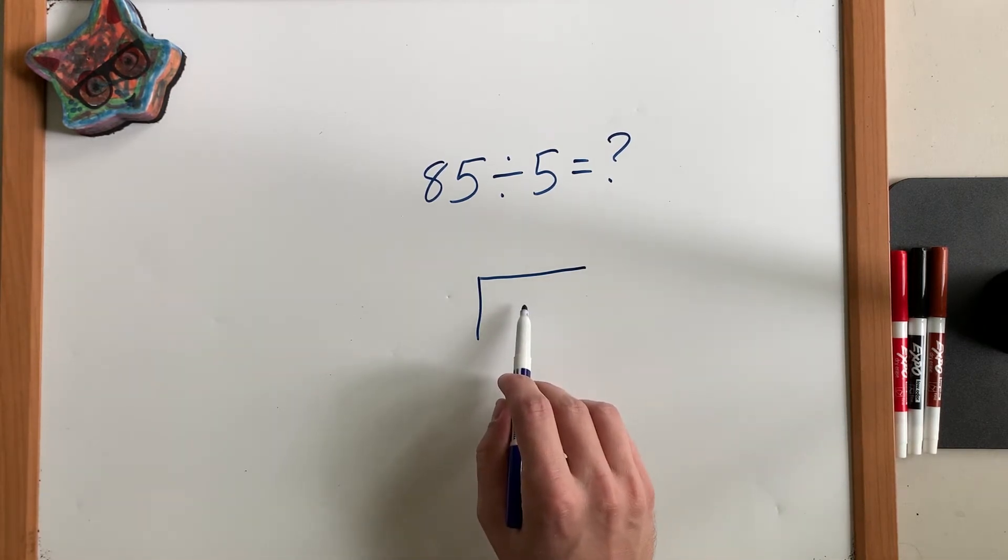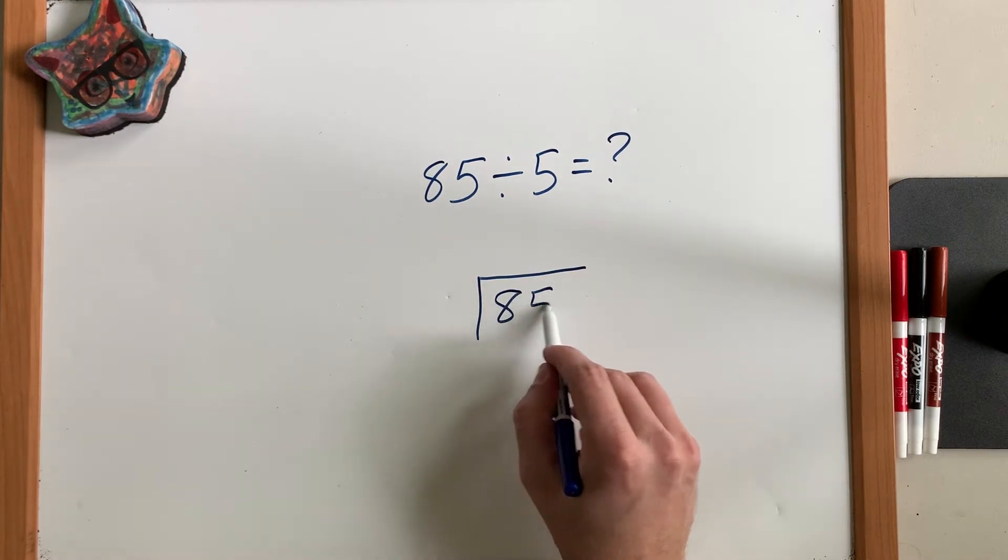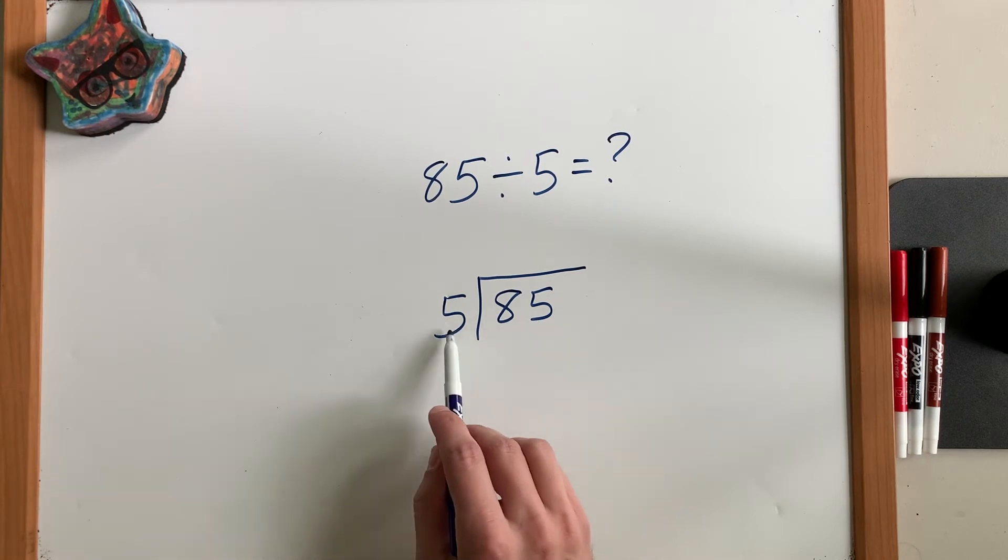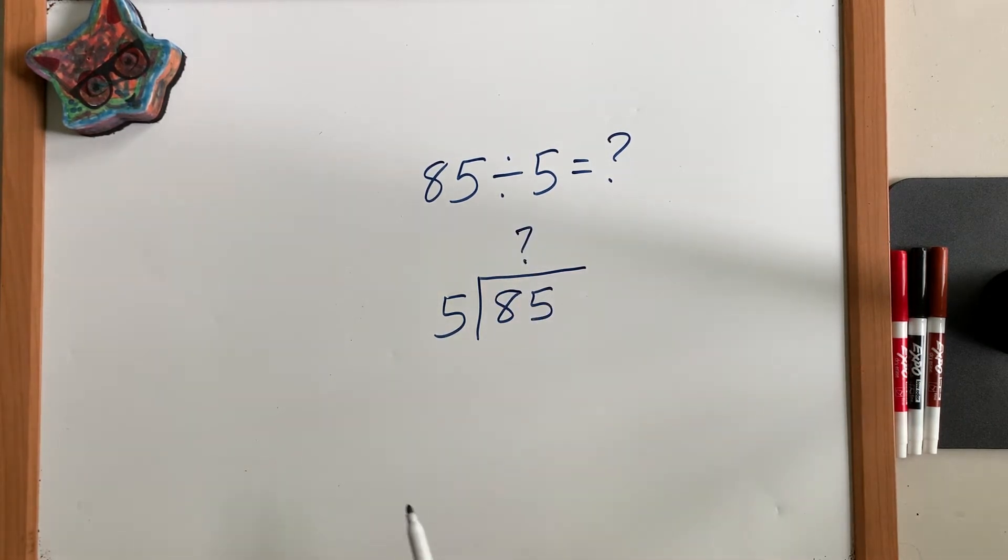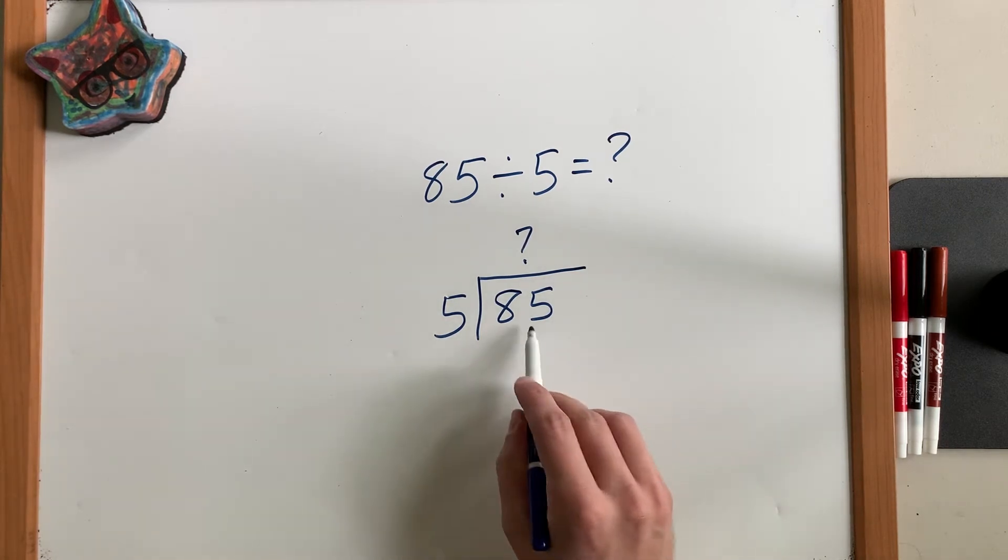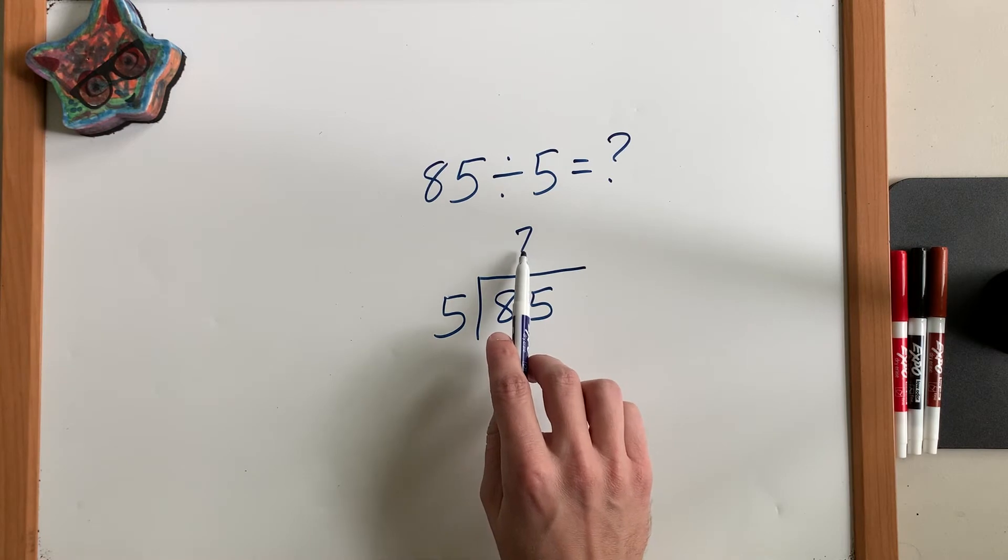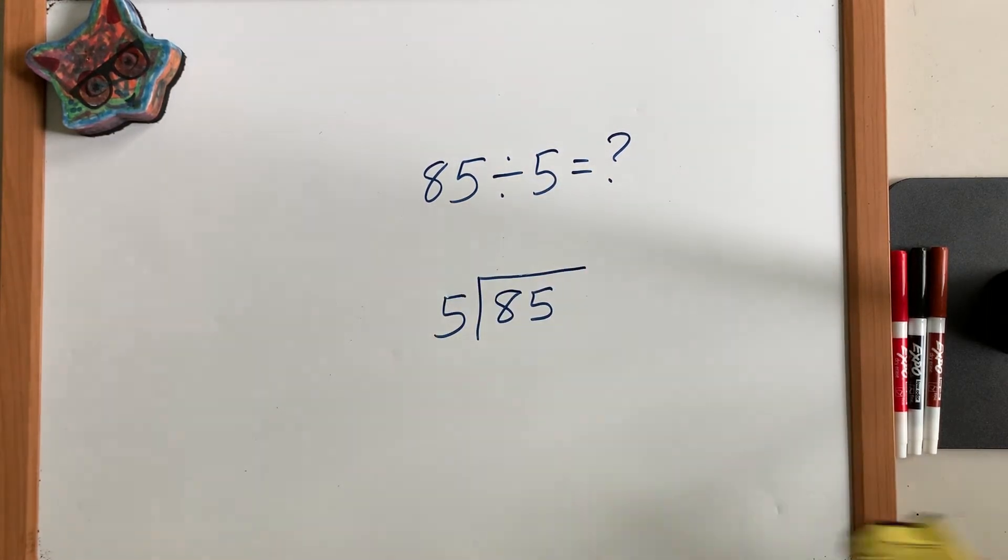So what we're going to do is turn this into a long division problem. And a long division problem, if you start with this division, what it's going to look like is this: 85 divided by 5 is going to equal something. And the way we label this, this is called our dividend, this is called our divisor, and the answer is called the quotient. So what we're going to do today is talk about how do I actually solve this.